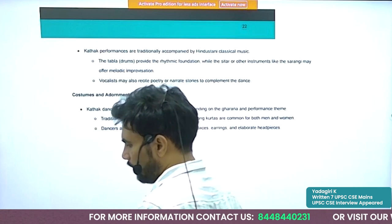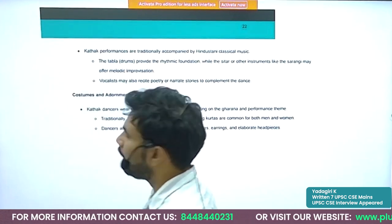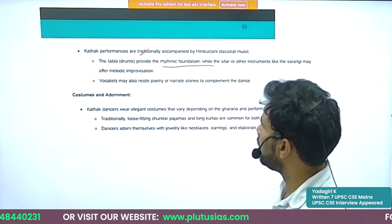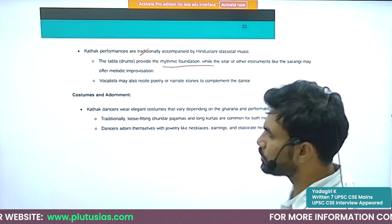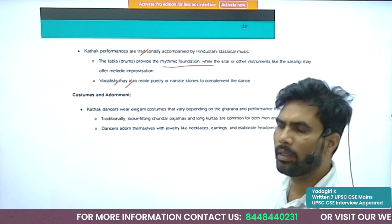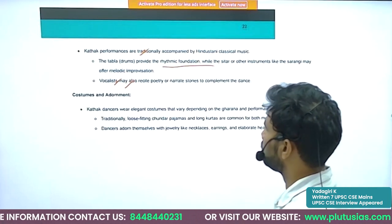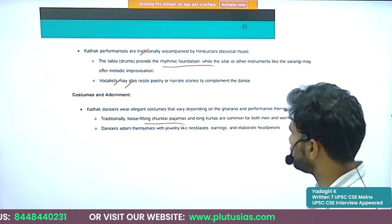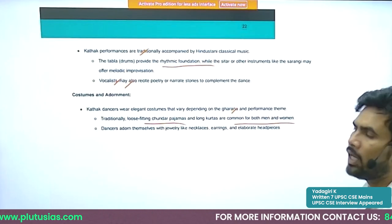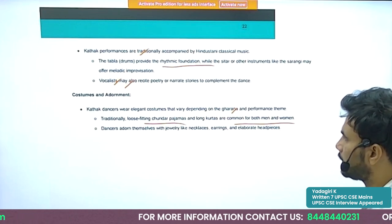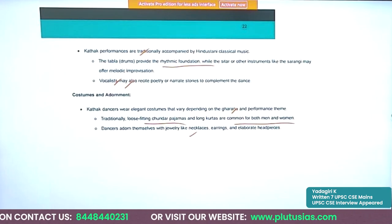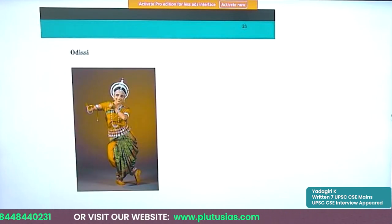Musical instruments are an integral part of Kathak — tabla and other instruments accompany the dance. Vocalists also play an important role. Traditionally, loose-fitting chudidar pajamas and long kurtas are common for both men and women performing Kathak. They also wear jewelry like necklaces, earrings, and elaborate headpieces.